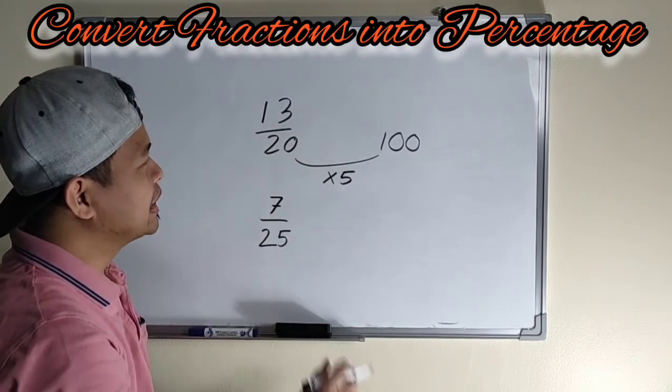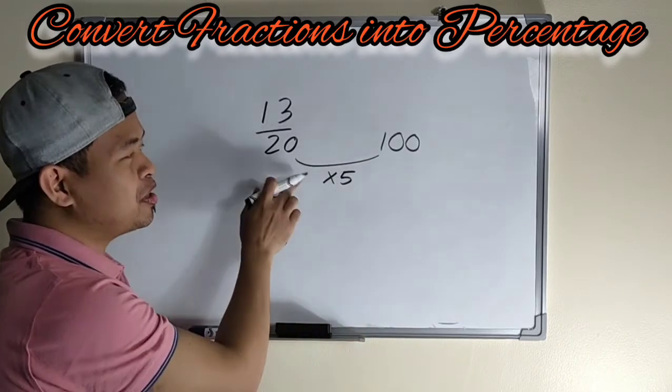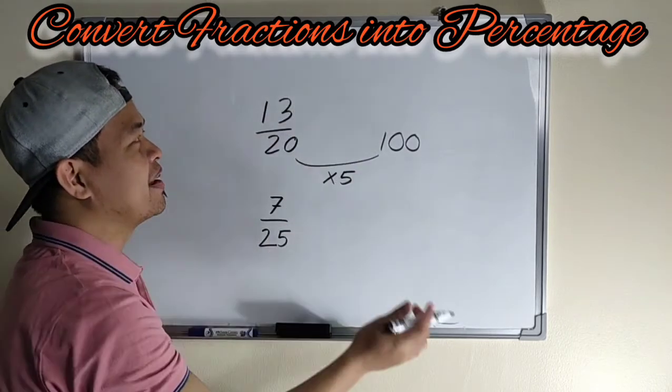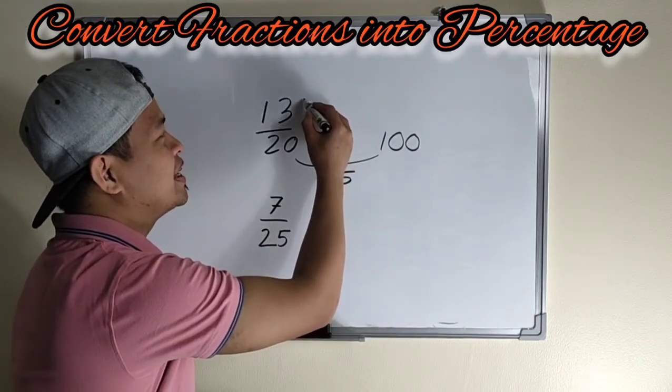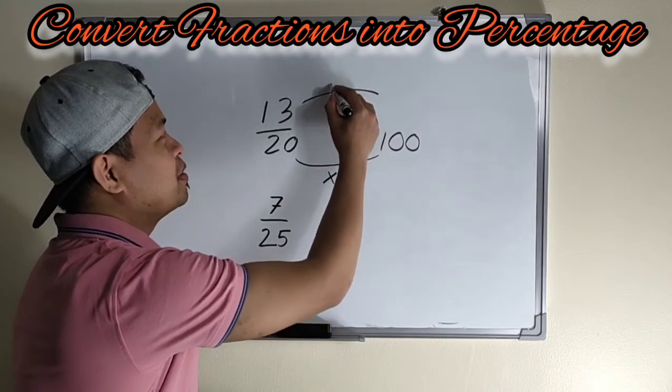So times 5, 20 times 5 is 100. So anong mi-multiply natin dito sa 20? Ganon din ang i-multiply natin to get the percentage of 13 over 20. So times 5.